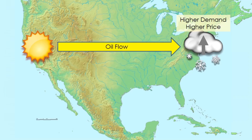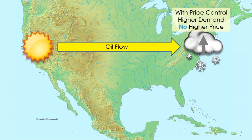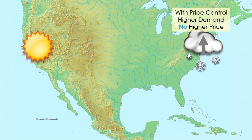Now, let us suppose that as in the 1970s, we have a price control on oil, so it is illegal for the price of oil to increase. With the price control, we're going to get higher demand but no higher price. There will not be that signal of a higher price, and because there isn't a signal, there won't be an incentive to bring oil from where it has low value to where it has high value. So the oil will no longer flow.